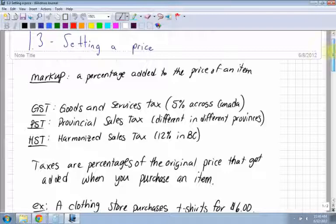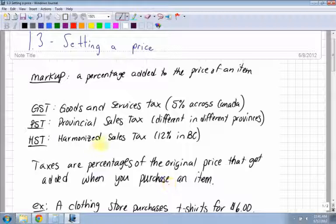Taxes are percentages of the original price that get added when you purchase an item. When you buy an item, they add on tax, and it's going to increase the price. When you see the price of an item on the shelf, that's not necessarily the price you're going to pay.